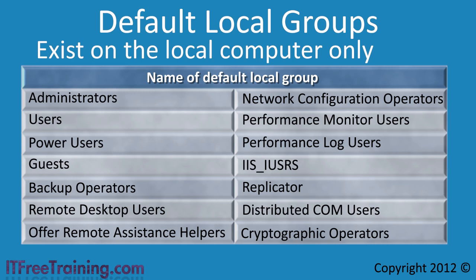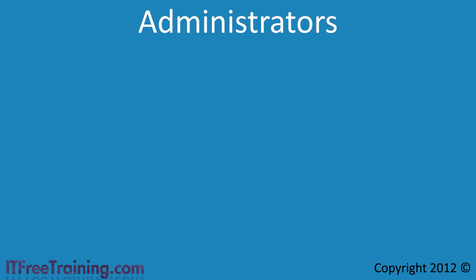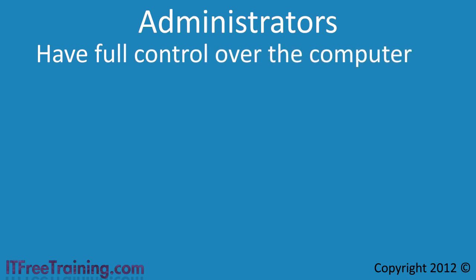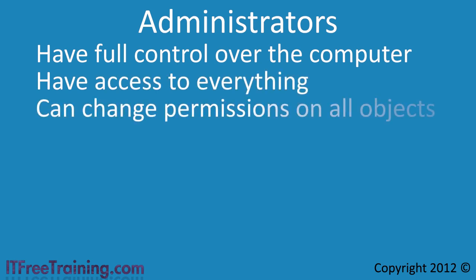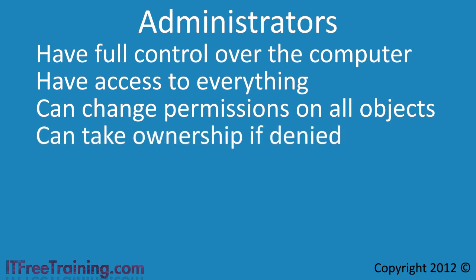When you add a computer to a domain, certain domain groups are put into certain local groups automatically to provide access for domain users and domain administrators to the computer. The first group is the Administrators group. Any user put into the Administrators group will have full control over the computer. An administrator can assign user rights and access control permissions as required. They have access to everything and can take ownership if they have been denied access. The average user should not be given administrator access unless necessary, as the required access can typically be achieved by adding the user to other groups.